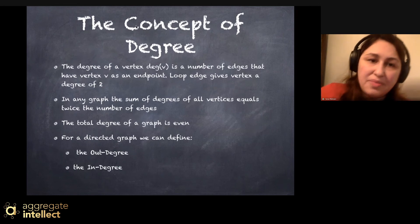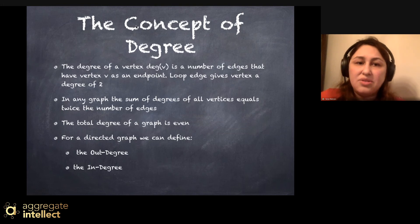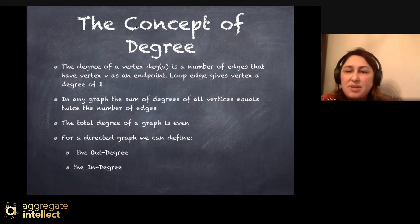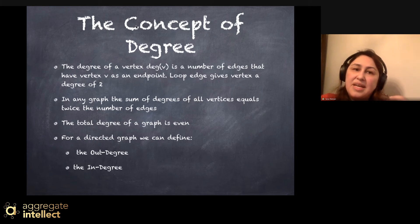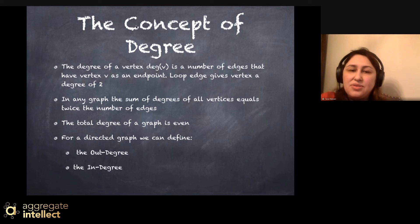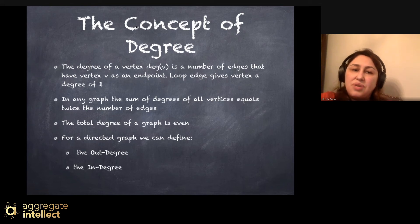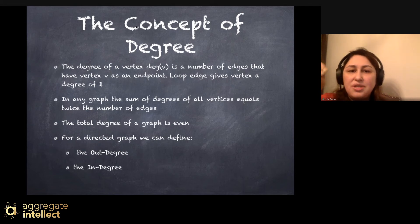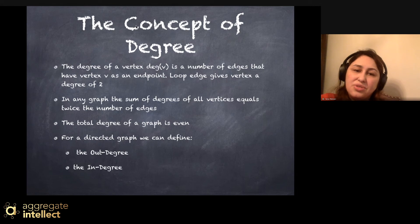One concept we need to know about graphs is degree. The degree of a vertex or node is the number of edges that have that node as an endpoint. Loop edges give a node a degree of two. In many graphs, the sum of degrees of all nodes equals twice the number of edges, which makes sense because for each edge, you have two nodes connecting to each other — so adding those degrees gives two per edge.